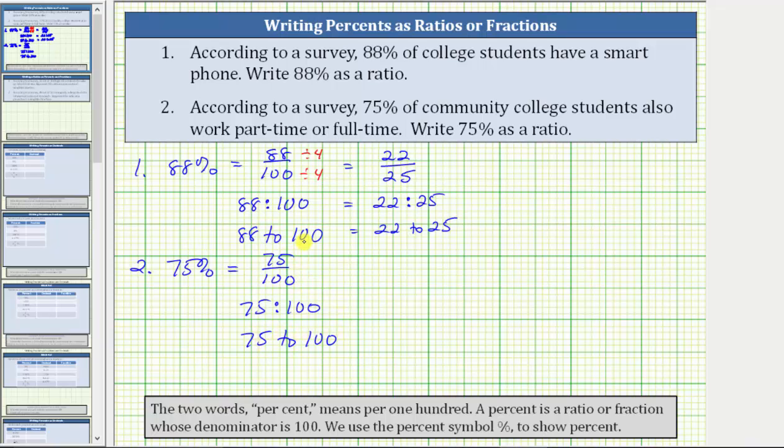To simplify the ratio of fraction, once again, we simplify out the greatest common factor between the numerator and denominator, which in this case is 25. To simplify, we divide 75 by 25, and we divide 100 by 25. 75 divided by 25 is equal to three. 100 divided by 25 is equal to four.